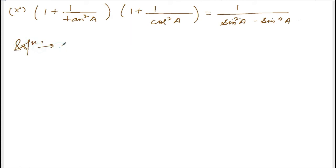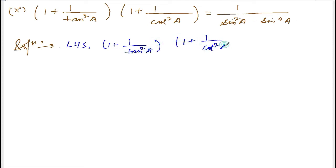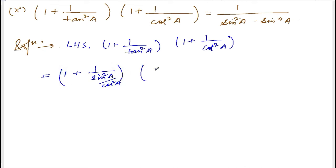Let us take the left hand side. Left hand side is 1 plus 1 by tan squared a, into 1 plus 1 by cot squared a. I can write tan as sine over cos, so 1 plus sine squared a divided by cos squared a, into 1 plus cos squared a divided by sine squared a.